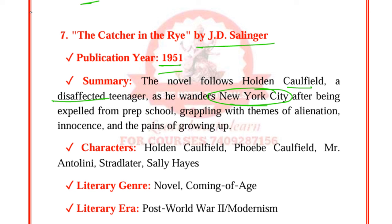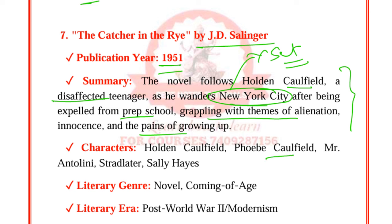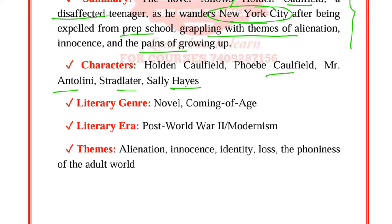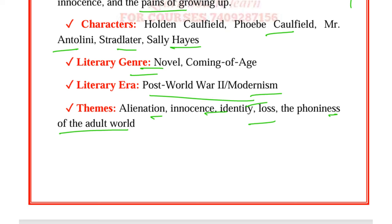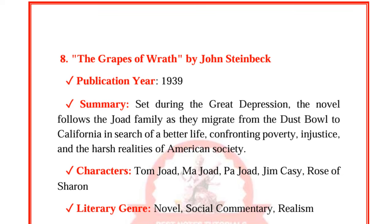The Grapes of Wrath by John Steinbeck was published in 1939. Set during the Great Depression, the novel follows the Joad family as they migrate from the Dust Bowl to California in search of a better life, confronting poverty, injustice, and the harsh reality of American society. Characters include Tom Joad, Ma Joad, Pa Joad, Jim Casy, and Rose of Sharon. It is a realistic novel with social commentary. Themes are societal injustice, the American dream, poverty, family, survival, and hope.